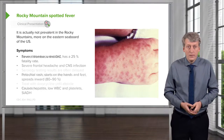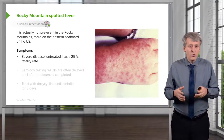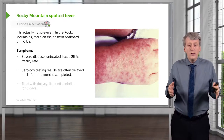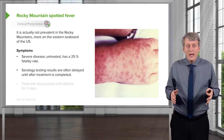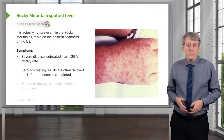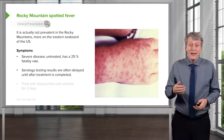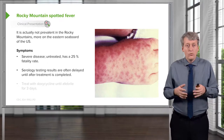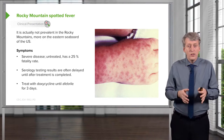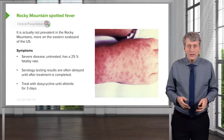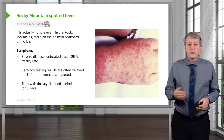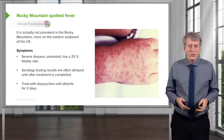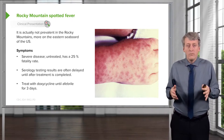Rocky Mountain spotted fever is a severe disease; untreated, it has a 25% fatality rate. Serologic testing is possible but requires a six-fold rise over several weeks, so we can't make the diagnosis serologically until long after the patient is better. This is therefore a clinical diagnosis, and if missed, results in fatality in 25% of cases. We treat with doxycycline, continuing until the patient has been afebrile for three days. If a patient is under 8, we treat with doxycycline anyway, because the risk of missing this disease is so severe, and because the shorter course mitigates the risk of lines in the teeth and bones.